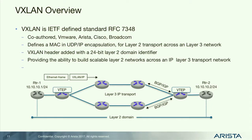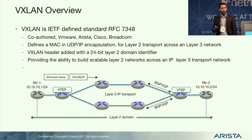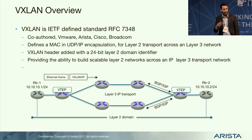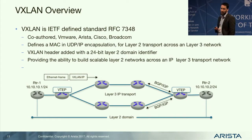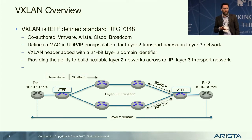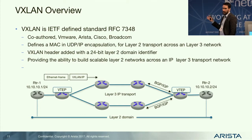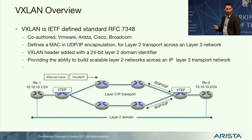VXLAN is now a defined standard. What's interesting is it wasn't driven purely by networking vendors — it involved application vendors like VMware, networking vendors like Cisco and Arista, and chip vendors. This means any merchant silicon coming to market now has VXLAN encapsulation in hardware, letting you get all the bandwidth benefits of merchant silicon. It is simply a MAC and IP encapsulation, allowing you to transport a layer 2 network across a layer 3 environment.